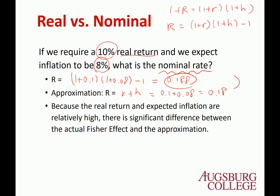The 0.8% difference is not small because these numbers are relatively high — 10% return and 8% inflation. In this case, you need to use the exact calculation. If the numbers are 2–3%, the gap is a lot narrower, so then you can just use the approximation.